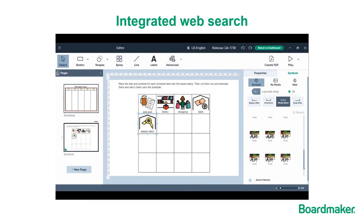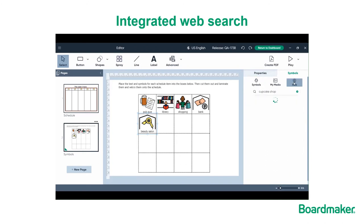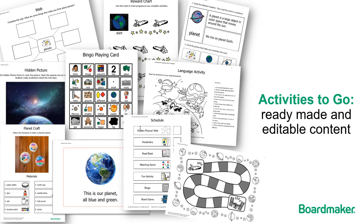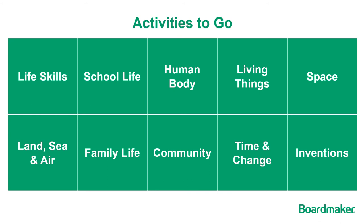Can't find the symbol you need or looking for something more specific? Just use the integrated web search to find an image that works for you — again, just drag and drop to place it in a button. But you don't have to make everything yourself. Boardmaker 7 also comes with pre-made curricula called Activities to Go, a treasure chest full of ready-made, editable and thematic resources and activities.